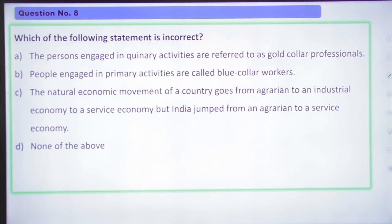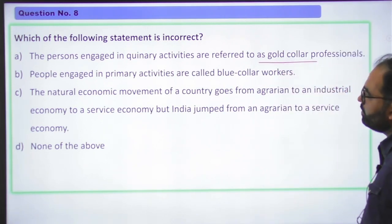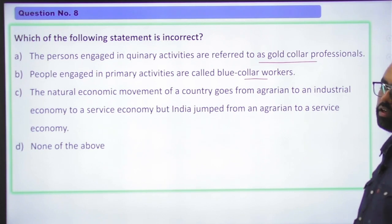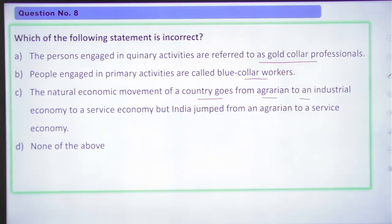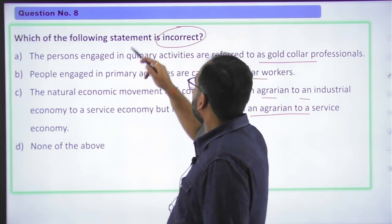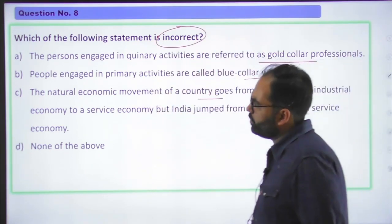Moving to question number eight. Which of the following statement is incorrect? The persons engaged in quaternary activities are referred to as gold collar professionals. People engaged in primary activities are called blue collar workers. The natural economic movement of a country goes from agrarian to industrial to service economy, but India jumped from agrarian to service economy. And d, none of the above. You have to tell which statement is wrong. The answer is D, none of the above is incorrect. All statements are correct.